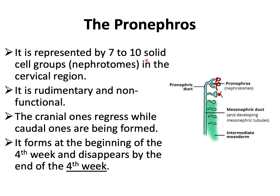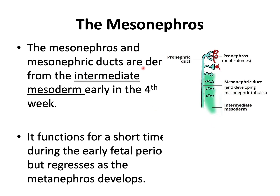The pronephros is represented by about seven to ten solid cell groups known as nephrotomes in the cervical region. It is rudimentary and non-functional. The cranial ones regress while the caudal ones are being formed. It forms at the beginning of the fourth week and disappears by the end of the fourth week. The mesonephros and mesonephric ducts are derived from intermediate mesoderm early in the fourth week. It functions for a short time during the early fetal period but regresses as the metanephros develops.